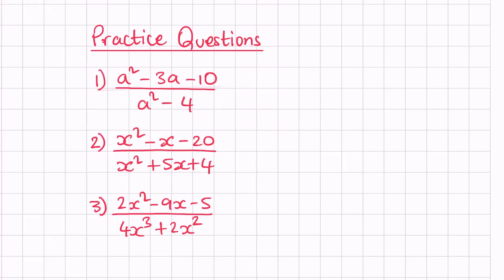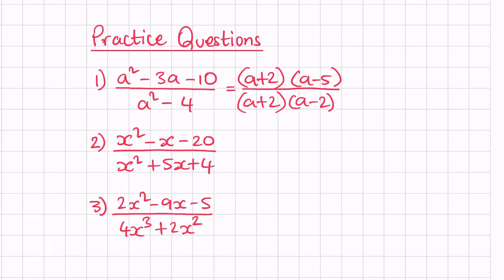I hope you had a good go at those questions. Let's go ahead and answer the practice questions on simplifying algebraic fractions by factorizing. For question 1, factorizing the numerator gives us a plus 2 and a minus 5. On the denominator we have a difference of two squares: a plus 2 times a minus 2. We can cancel a plus 2, leaving a minus 5 over a minus 2.